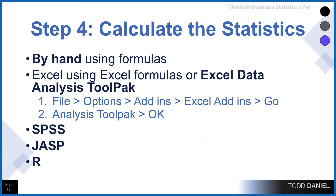Here are the options we have for calculating our statistics. We could do them by hand using formulas — we'll do that with our proportions test. Or we could use Excel, either with formulas we've learned or with the Excel Data Analysis Tool Pack. Other options include SPSS, JASP, R, or Jamovi — other statistical software available for analysis. I'm going to show you the steps to do an analysis in those various ways, whether it's Excel, JASP, or by hand.